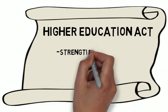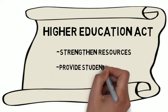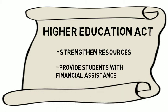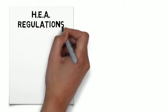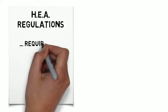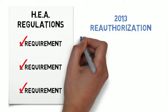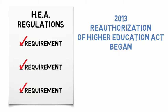The Higher Education Act is federal legislation designed to strengthen educational resources of colleges and universities and to provide post-secondary students with financial assistance. In order for a college or university to receive federal financial assistance, including the acceptance of student loans, it must meet all requirements stated in the Higher Education Act.